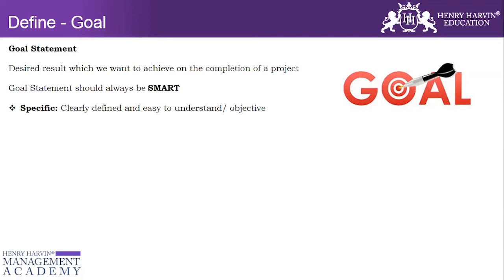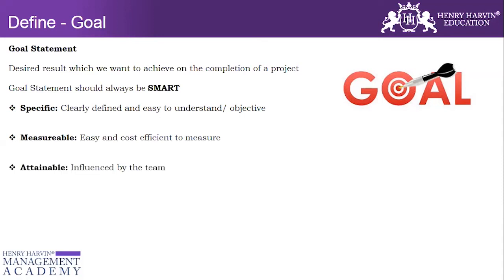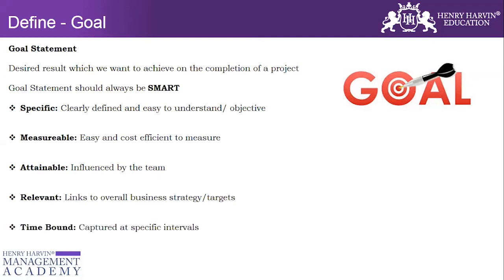SMART is an abbreviation where S stands for Specific — your goal statement should clearly define an easy-to-understand objective. M stands for Measurable — it should be easy and cost-efficient to measure. A stands for Attainable — it is influenced by the team. R stands for Relevant — it links to the overall business strategy and targets. T stands for Time-bound — it is captured at specific intervals. A goal statement should always start with a verb, such as 'to improve,' 'to increase,' 'to decrease,' 'to reduce,' or 'to eliminate.'